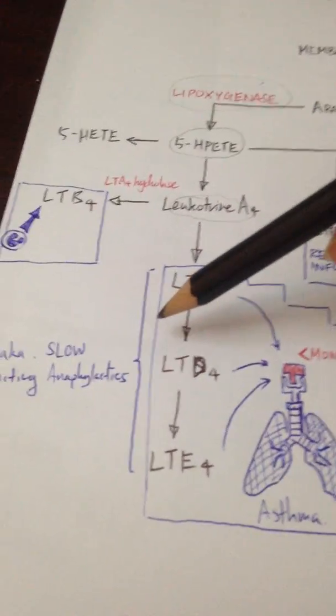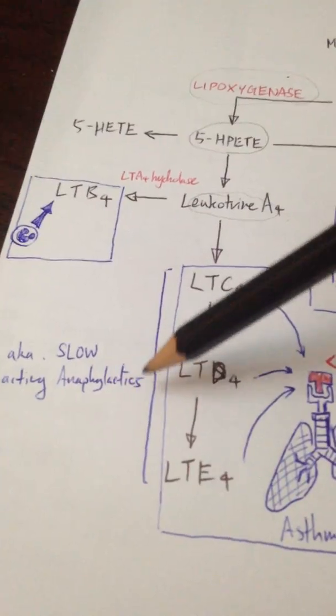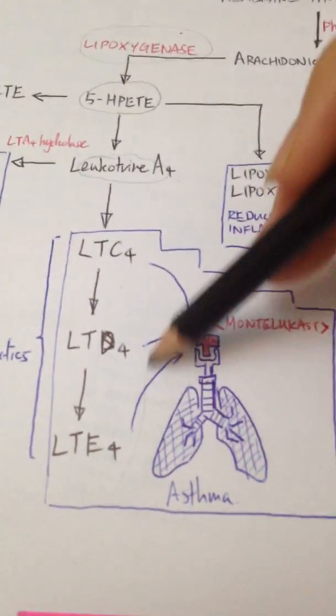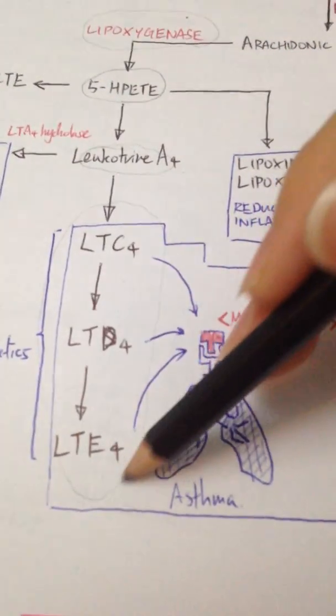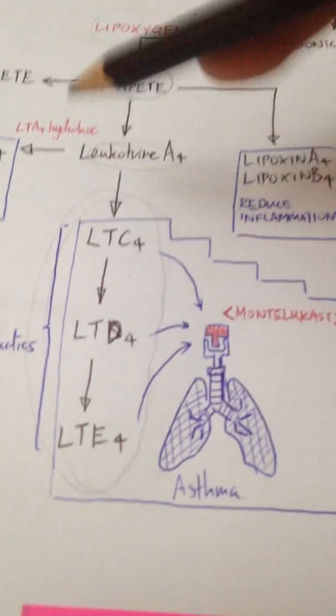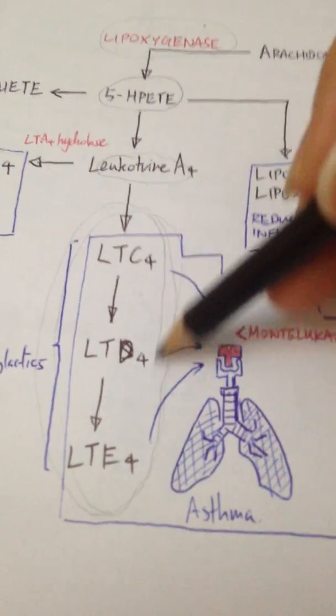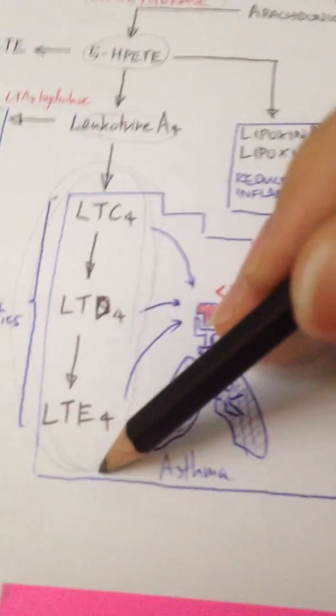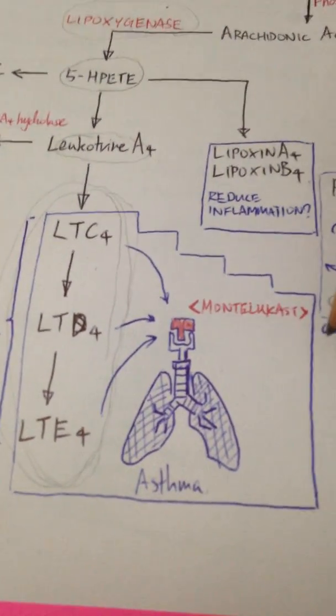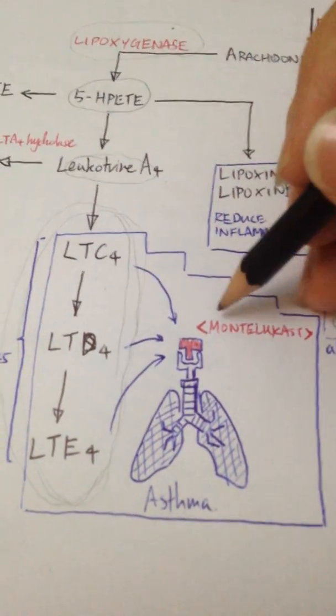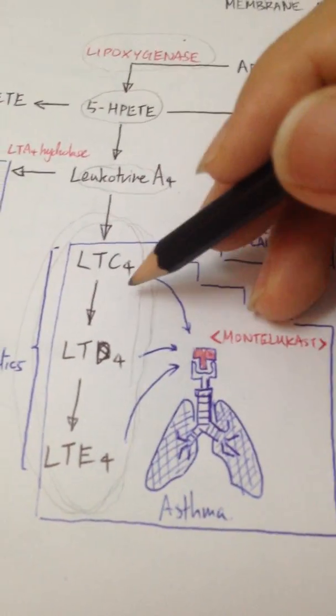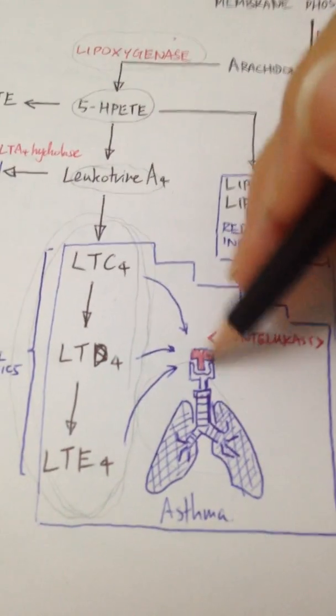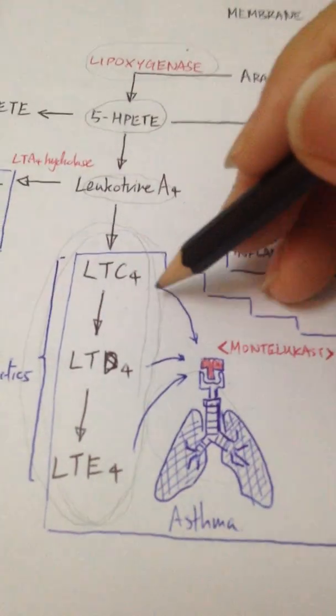Those are also known as the slow acting anaphylactic substances because these are primary players in causing anaphylaxis in us. Most importantly, these actions occur in asthmatic patients. Asthmatic patients have more receptors for leukotrienes in their lungs, which would cause them to have bronchoconstriction when the leukotrienes are around.